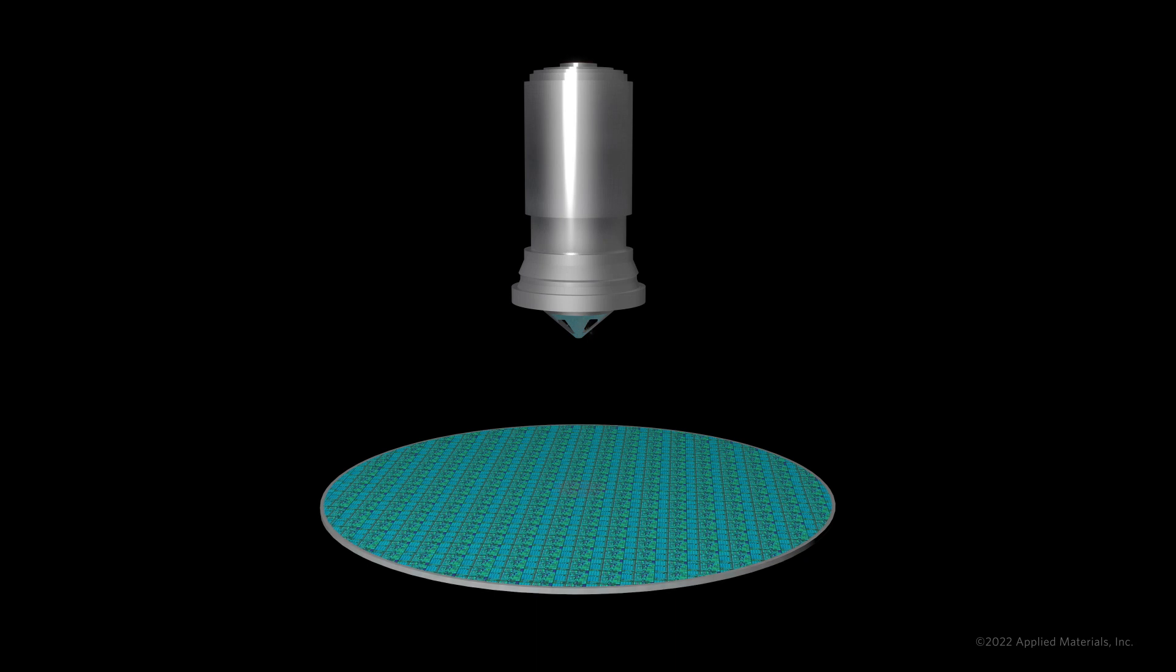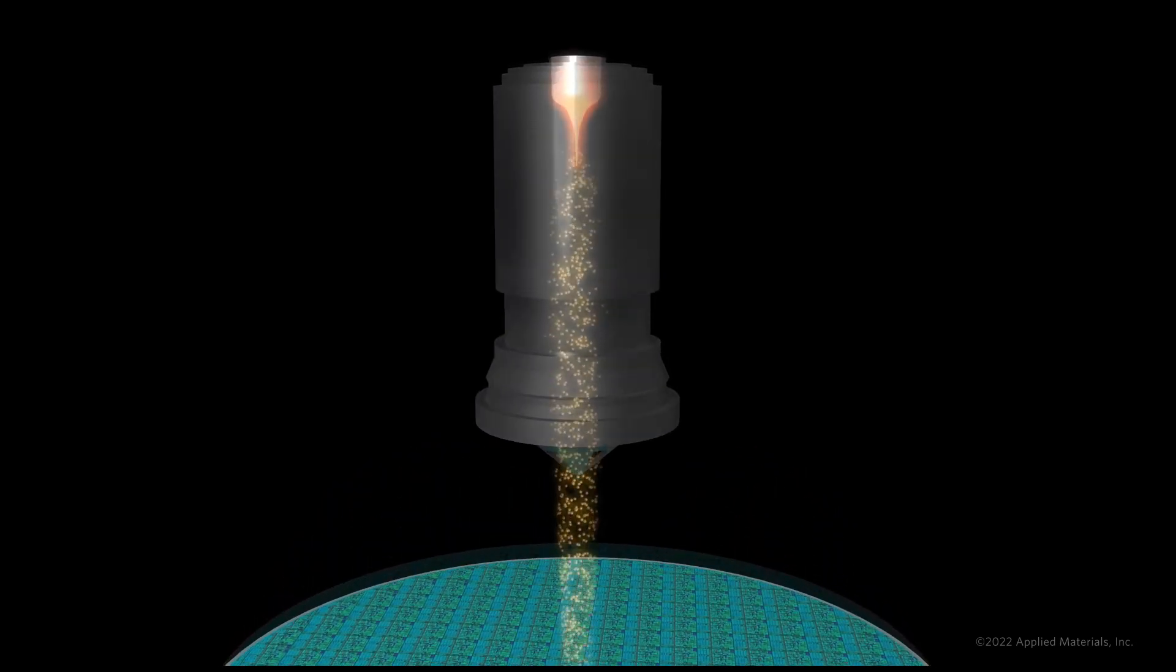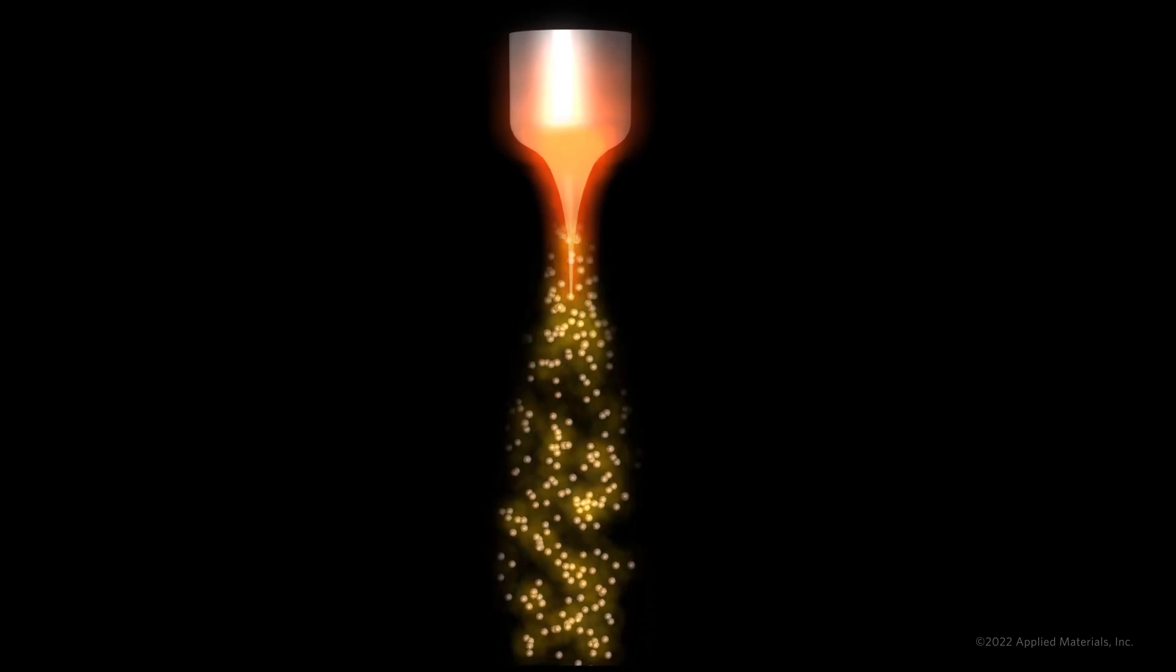We start by taking a closer look at the inside of the SEM column, where we will find a traditional TFE source at the top, emitting electrons at very high temperatures.